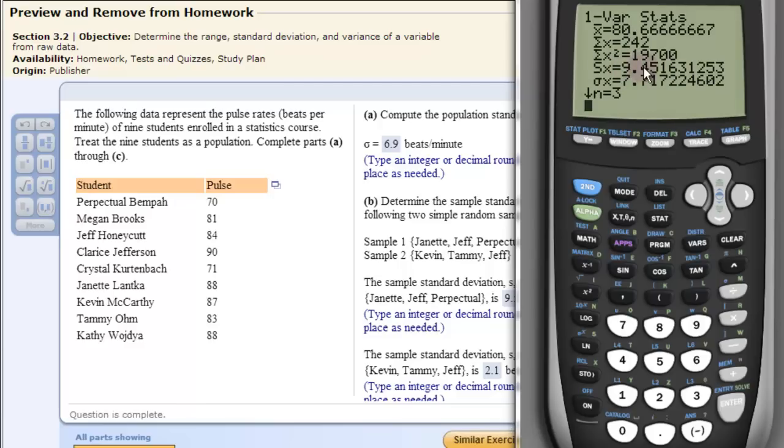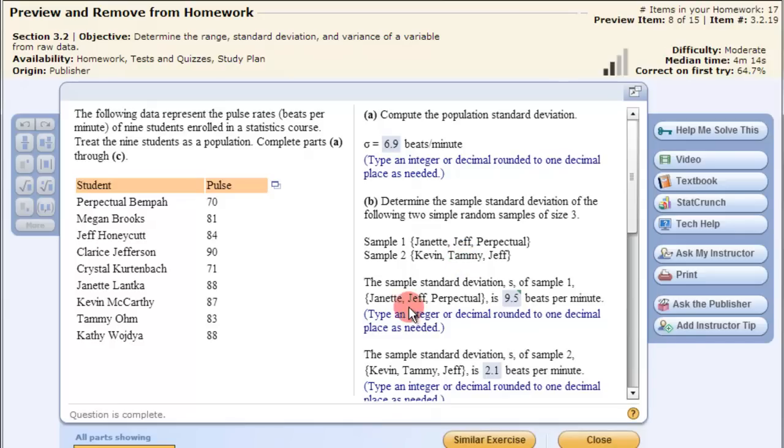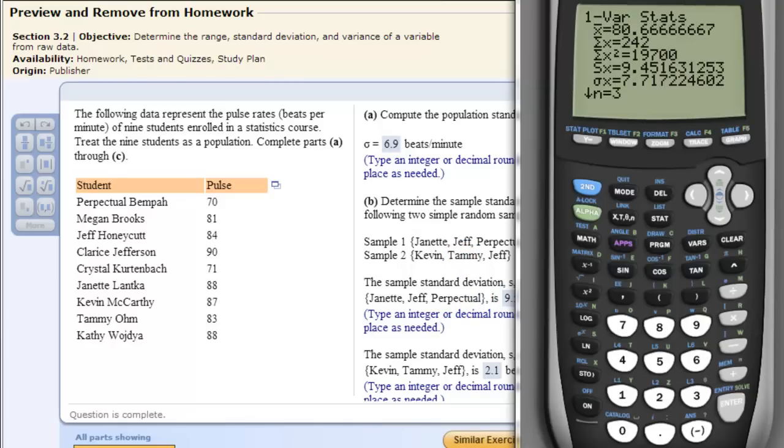So if you round it off to one decimal place like they want, 9.5, and that would be what the sample standard deviation is. So keep in mind, sample standard deviation, population standard deviation.